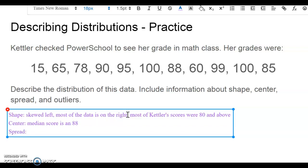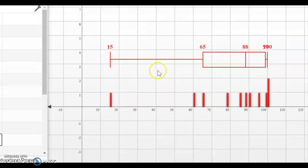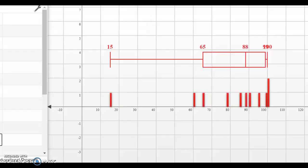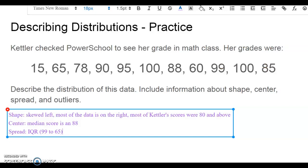When we think about spread, because we used median as our measure of center, we want to use IQR as our measure of spread. So looking back at this data, our IQR, it looks like it's going from 99 at Q3 to 65 at Q1. So our IQR is going to go from 99 to 65. So I'm going to do 99 minus 65, and that is going to give me an IQR of 34 points. So her data is pretty spread out. Her scores are pretty spread out because her IQR spans over, or the middle 50 percent of her scores span over 34 points.